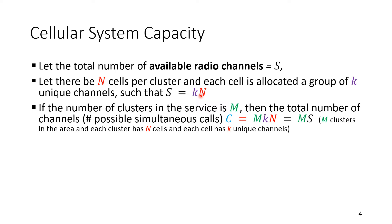If the number of clusters in the service area, let's say Bahrain, Dammam, Khobar, wherever the city, Riyadh, if the number of clusters in the service is capital M, then the total number of channels, you will need to multiply also by M because this is per cluster. Now the total capacity or number of possible simultaneous calls is capital M, K, N, or if you want to combine these two, it would be MS.